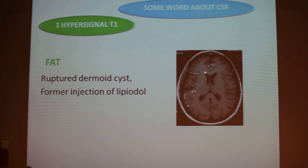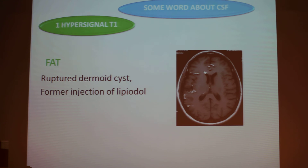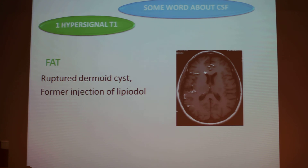After blood, sometimes you can see fat — this was the case of a rupture of a dermoid cyst into the subarachnoid space, and you can see there is fat in the ventricles and in the sulci. It's really very striking.